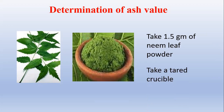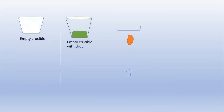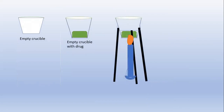Tared crucible means one whose empty weight you have already taken and noted in the book. So for this purpose, we require an empty crucible. In that empty crucible, we have to place 1.5 grams of the drug.